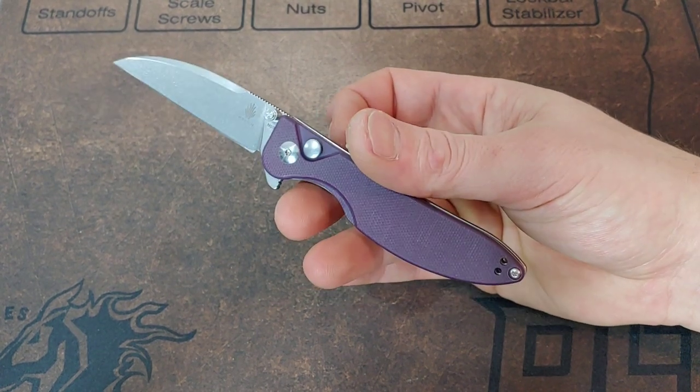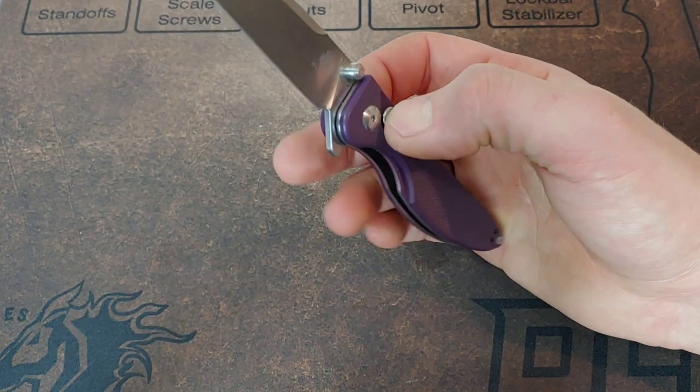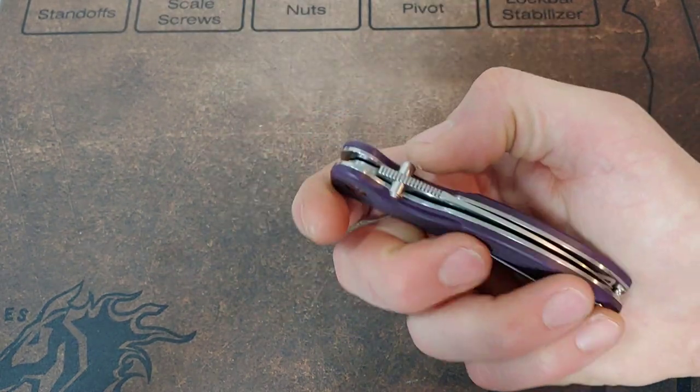The blade steel's N690, handles are G10 with steel liners, button lock, rolling on ceramic bearings.